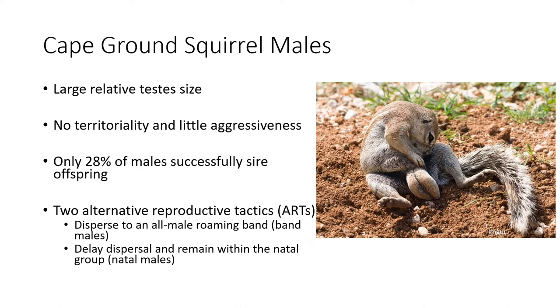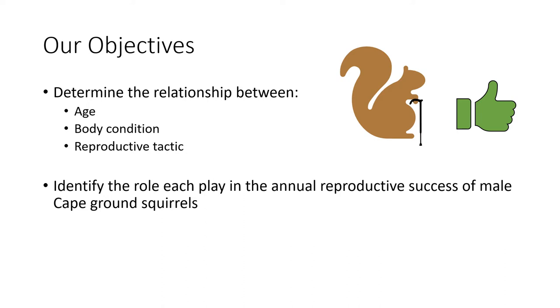The objectives for our research were straightforward. We wanted to determine the relationship between age, body condition, and reproductive tactic, as well as identifying the role each plays in the annual reproductive success of male Cape ground squirrels.